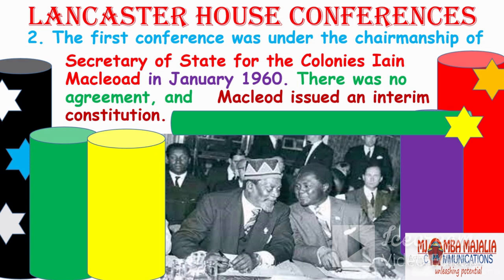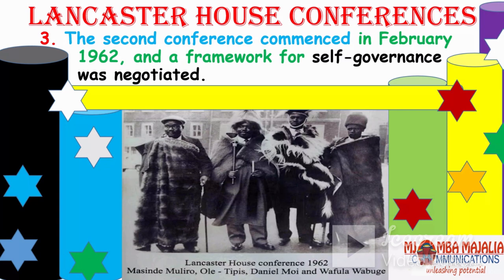The second conference commenced in February 1962 and a framework for self-governance was negotiated. Among those present were Masinde Muliro — that's why we have Masinde Muliro University — Ole Tipis representing the Maasai, Daniel Moi who became vice president and later president, and Wafula Wabuge, who was part of the Lancaster House Conferences in 1962.